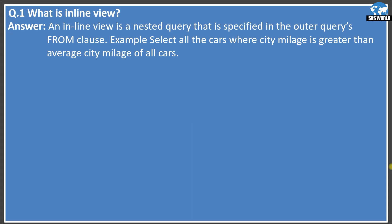The first question is: what is inline view? An inline view is a nested query that is specified in the outer query's FROM clause. When we specify any query in the FROM clause, that is called an inline view. Let's understand this by an example.